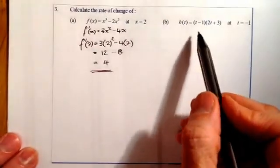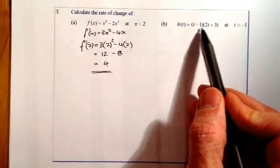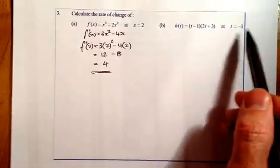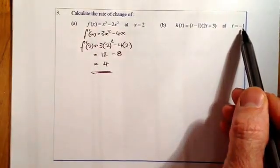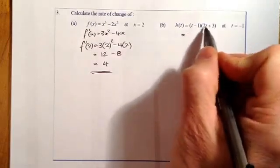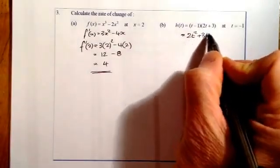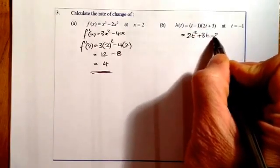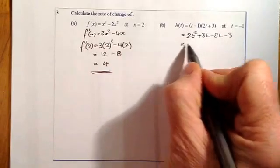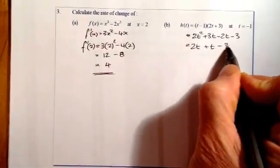For part b, this isn't a form that I need to multiply out. So I'm going to multiply this bracket out by FOIL. Once I differentiate it, I'm going to substitute t equals minus 1. So I'll multiply the brackets out by FOIL. That's going to be 2t squared, plus 3t, minus 2t, and minus 3. I'll gather together the middle terms, so that'll give me plus t minus 3.